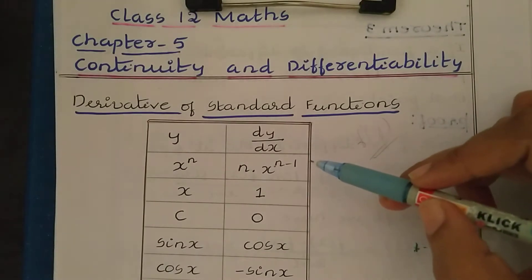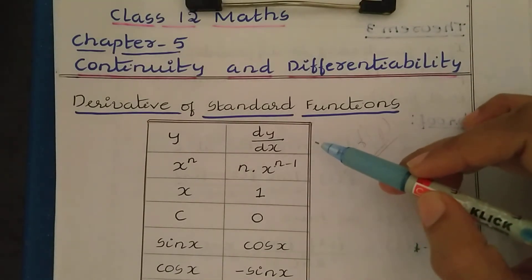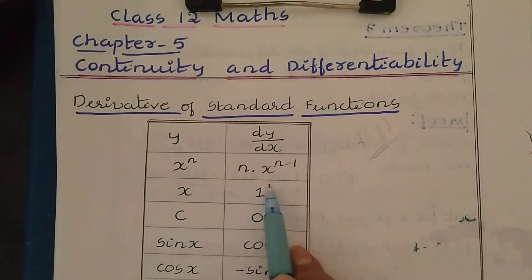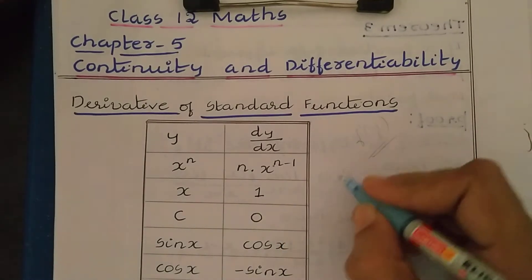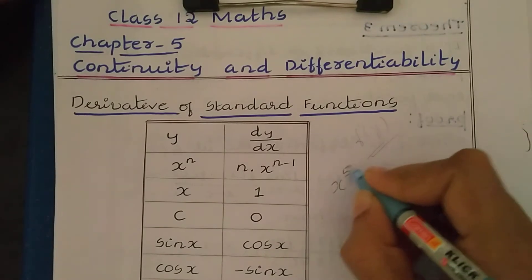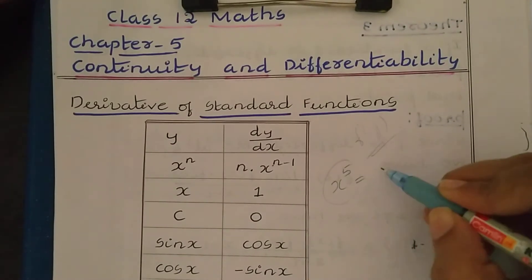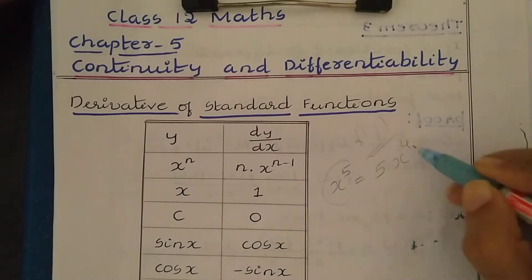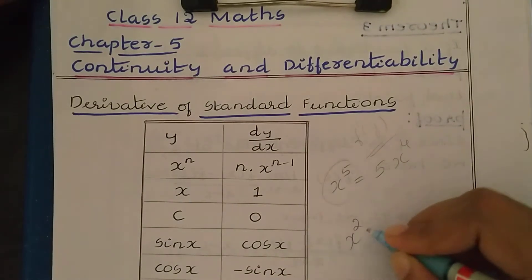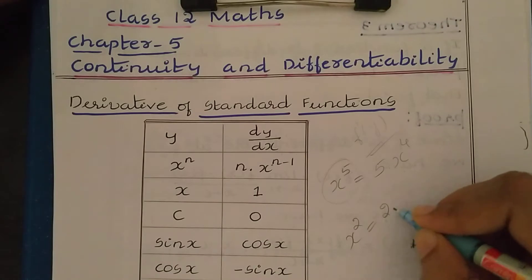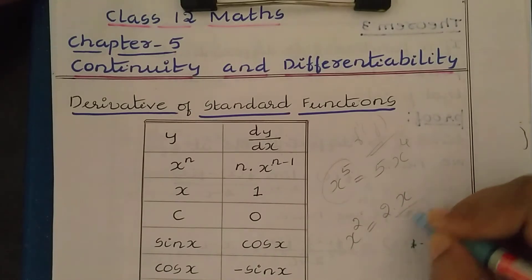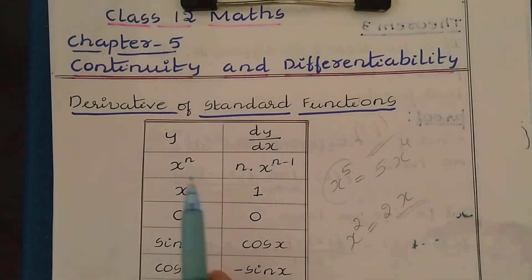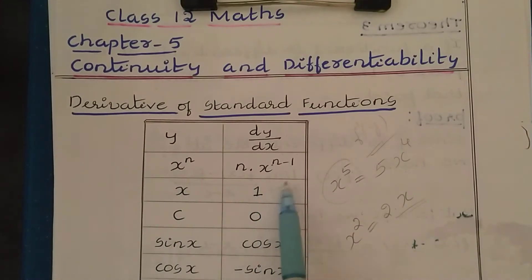In this table I have taken some standard function derivatives. First, x to the power n: the derivative of x^n is n·x^(n−1). For example, the derivative of x^5 is 5·x^4. Similarly, the derivative of x² is 2·x^1, which is 2x. So this is how we find the derivative of polynomial functions using the power rule.